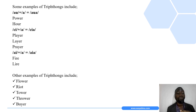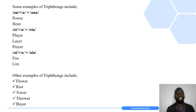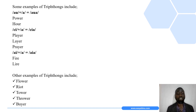We also have triphthongs made up by taking the two vowel sounds /aɪ/ and adding another vowel sound /ə/, leading to the triphthong /aɪə/. Some words in this category are fire and lyre.